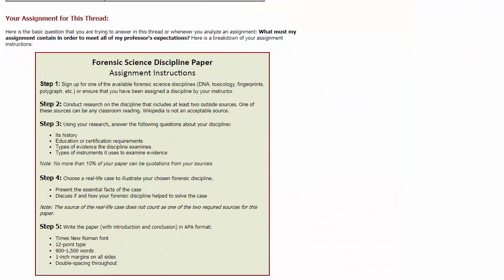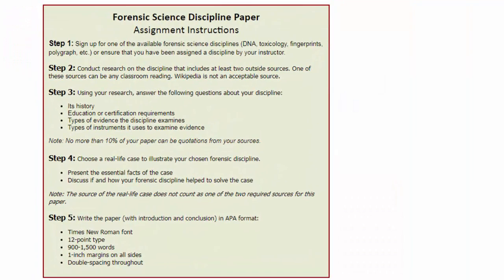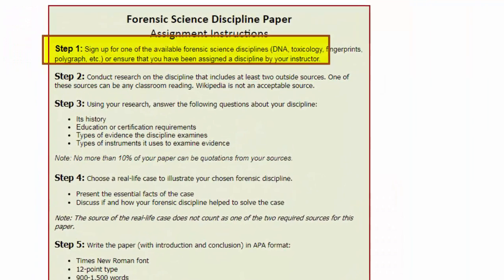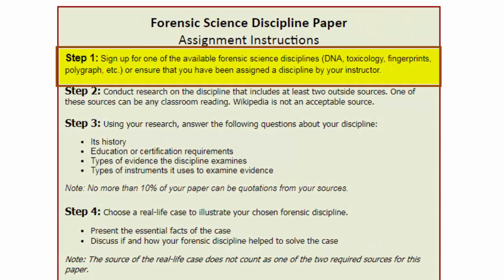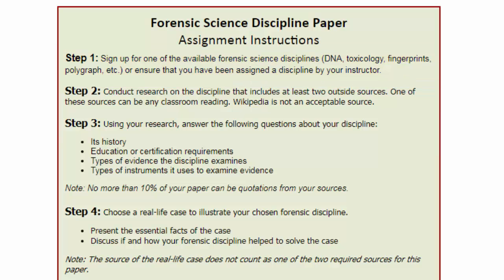As you can see, we've divided the instructions into five simple steps. In Step 1, please sign up for one of the Forensic Science Disciplines or ask that your instructor assign you one. Please don't begin work on this paper until you've confirmed with your instructor which of the Forensic Science Disciplines you will be studying.